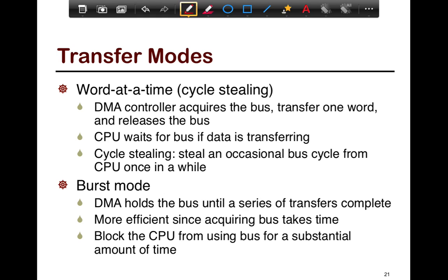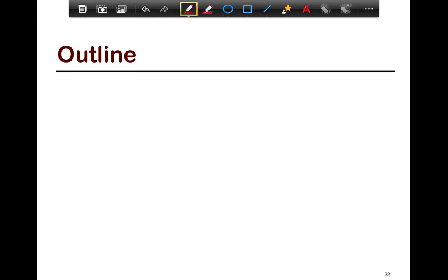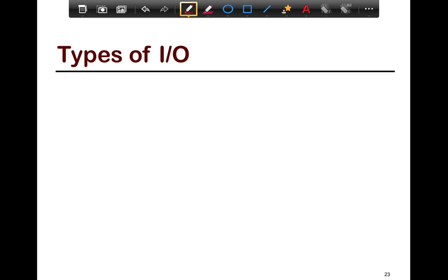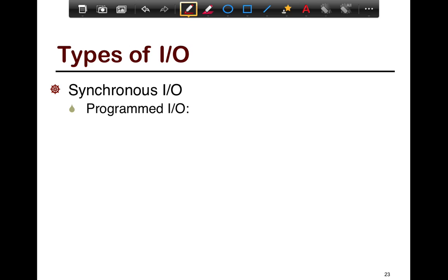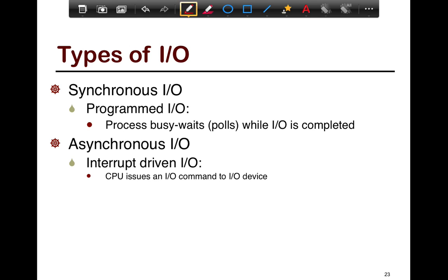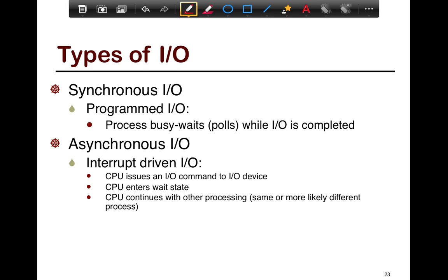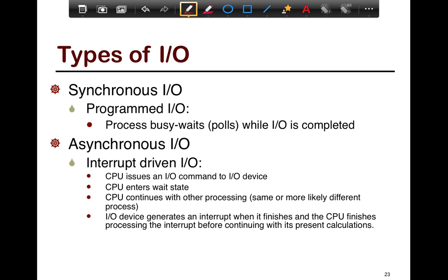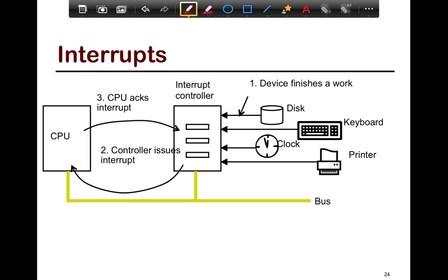Normally, a technique used is that DMAs operate in burst mode but get de-prioritized on the bus. The types of IO interaction are: first, synchronous IO or programmed IO, which essentially busy waits by polling the IO device until IO is complete. Second, asynchronous or interrupt-driven IO, where the CPU issues a command, enters a wait state, continues with other processing, and the IO device generates an interrupt when done. Finally, direct memory access can also be considered an asynchronous form of IO.